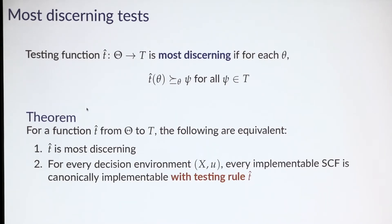It turns out this is exactly the condition we need. One quick definition: a testing function t-hat is most discerning if for each type theta, it assigns to type theta a test that's more theta-discerning than every other test. With this definition, we can state our main implementation result. The following are equivalent: test t-hat is most discerning, and for every decision environment, every implementable social choice function is canonically implementable with this testing function t-hat. This allows us to pin down the testing rule without loss of generality.